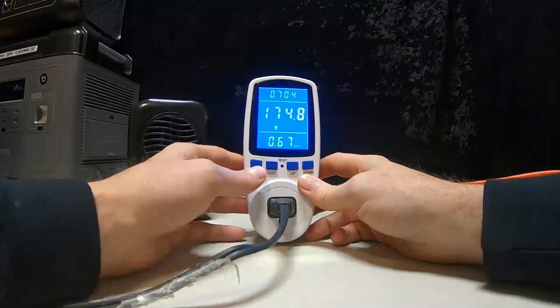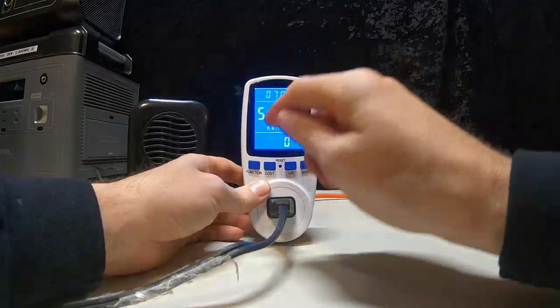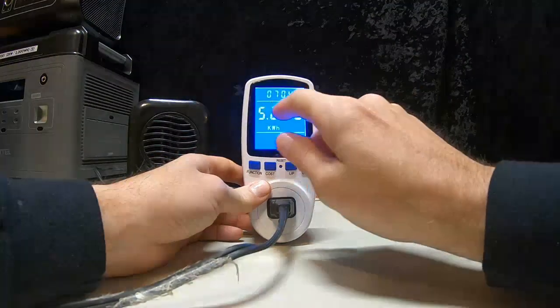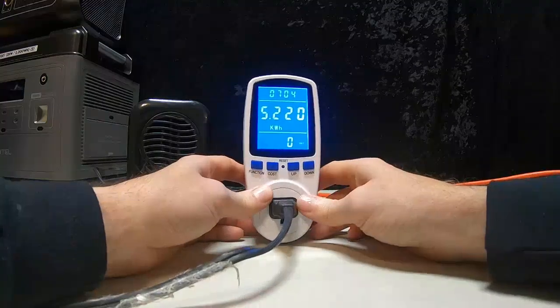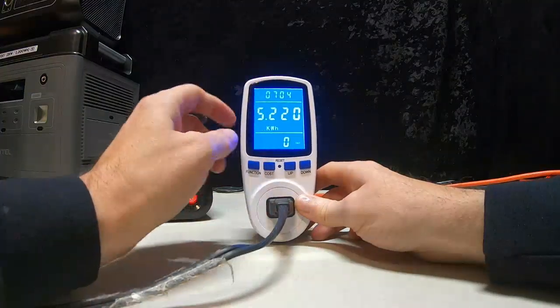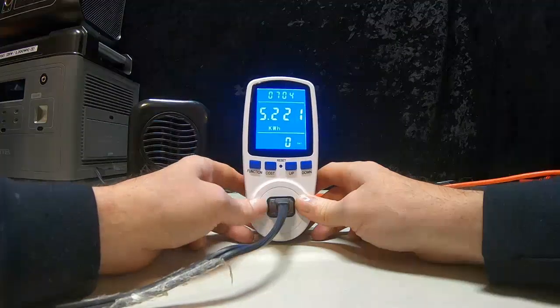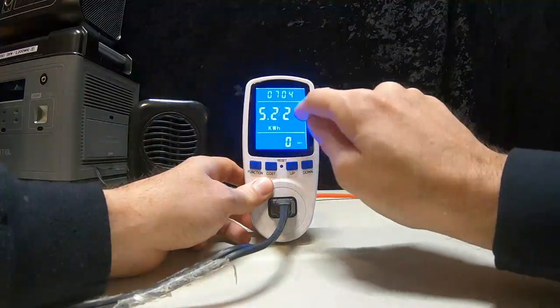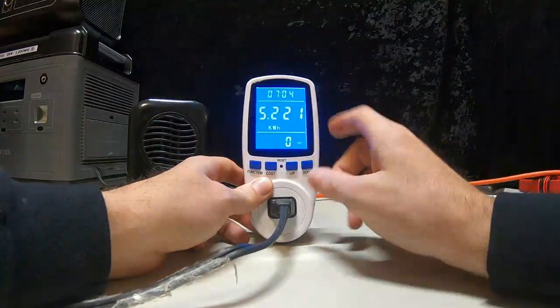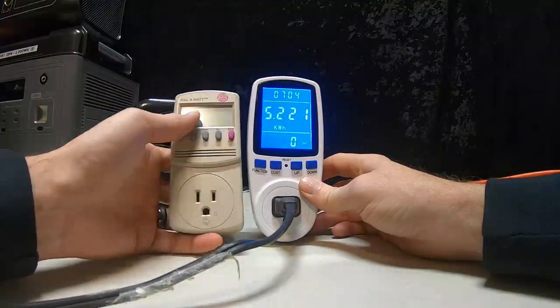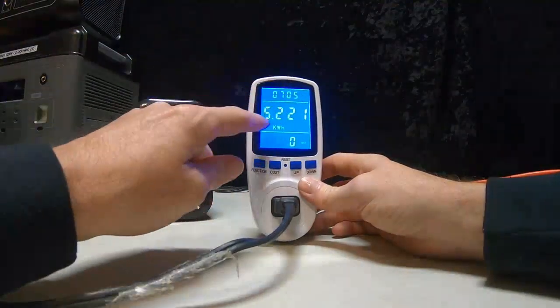So we have that screen. Now the next one, kilowatt hours, 5.2. This is how much I burned to fill up a power station last night. Five point two. See, 5.220 kilowatts. Oh there's, see, 5.221. That's neat. This one just had a couple places, but this actually goes three under the decimal point.